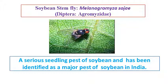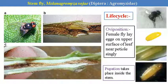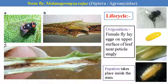Soybean stem fly is Melanagromyza sojae. This is from Diptera, family Agromyzidae. It is a serious seedling pest of soybean in the initial stage. It has been identified as a major pest of soybean throughout the year. The stem fly has a very short life cycle. The female fly lays eggs on the upper surface of the leaf near the petiole. The maggots hatch and directly bore into the stem — hence it is termed stem fly. It looks like a house fly. Pupation takes place inside the stem in cocoon formation. This shows the adult, egg, larvae, and maggot.